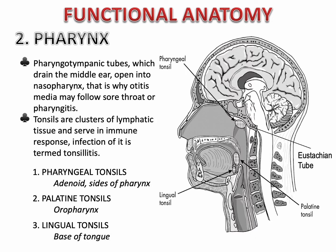Pharyngeal tympanic tubes, which drain the middle ear — also called the eustachian tubes — open into the nasopharynx. There is a connection from the pharynx up to the ears. That is why otitis media may develop if a patient has a sore throat or pharyngitis. Tonsils are clusters of lymphatic tissues — mucosa-associated lymphatic tissues (MALT) — which serve in immune response. When infected, this is called tonsillitis.